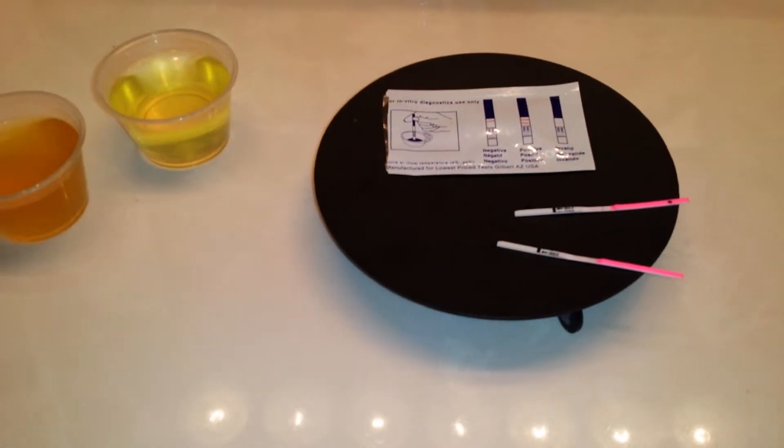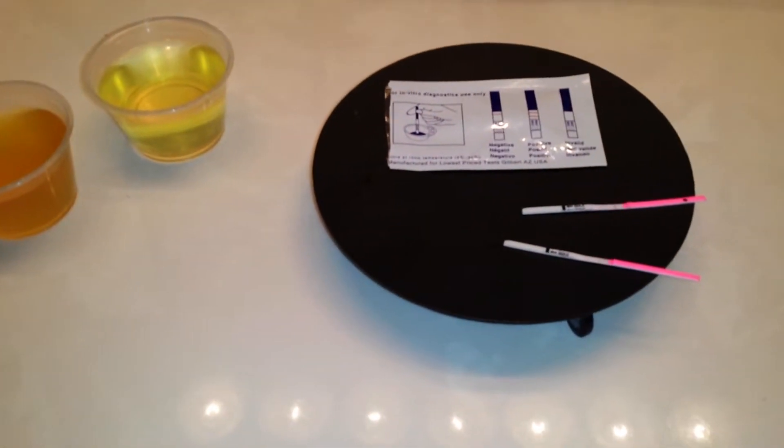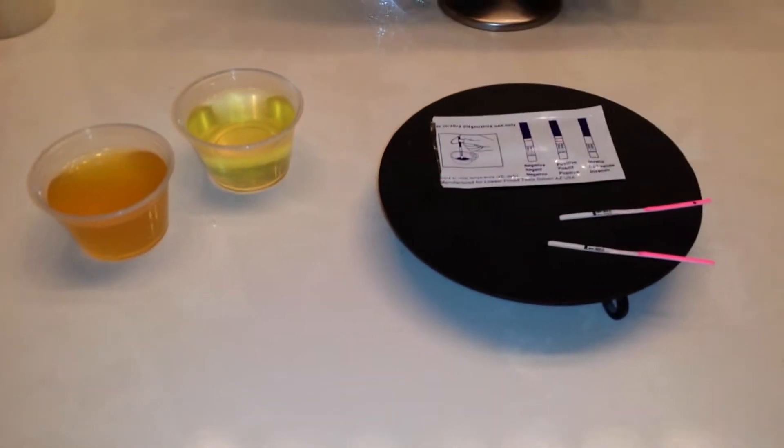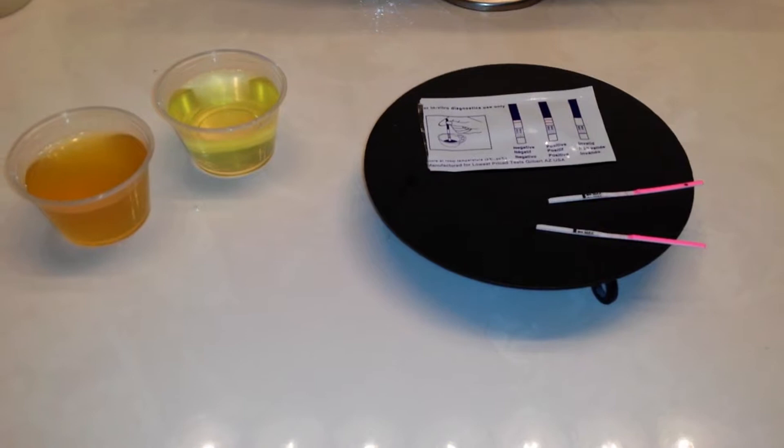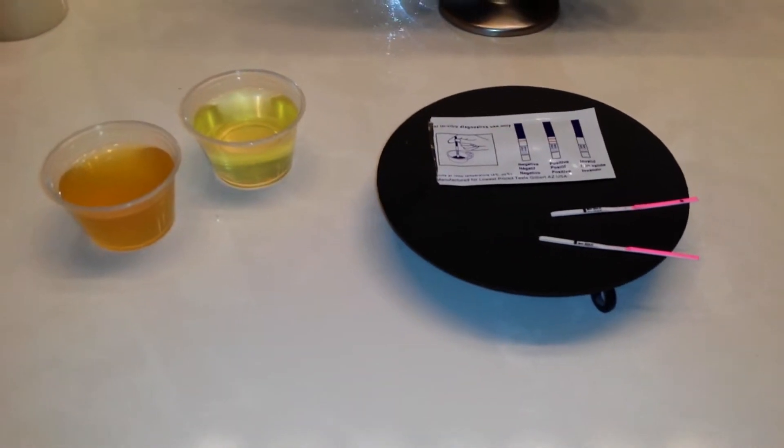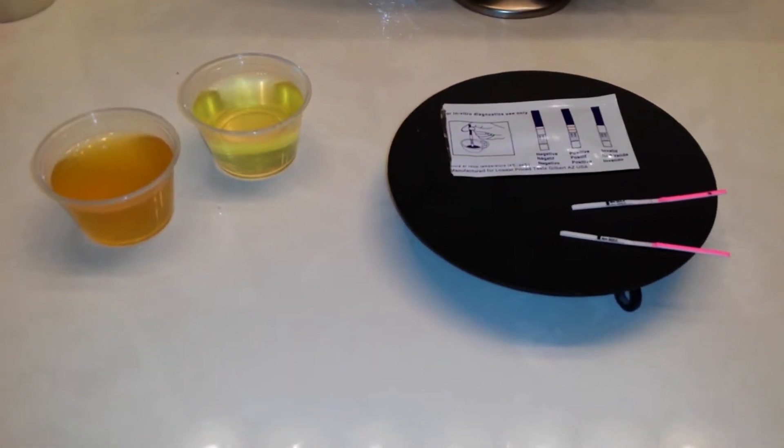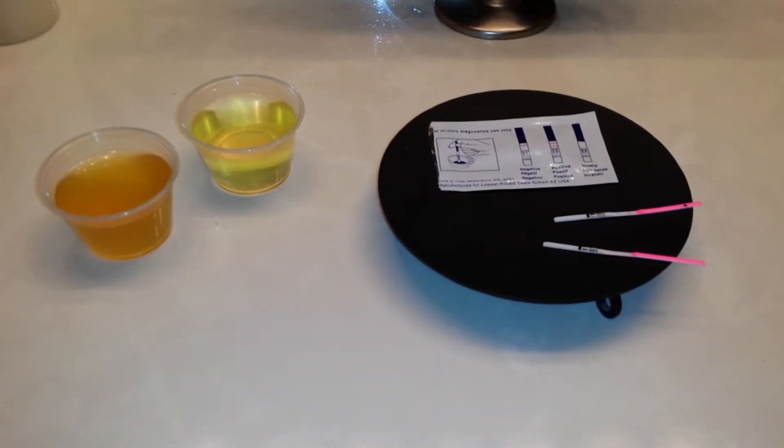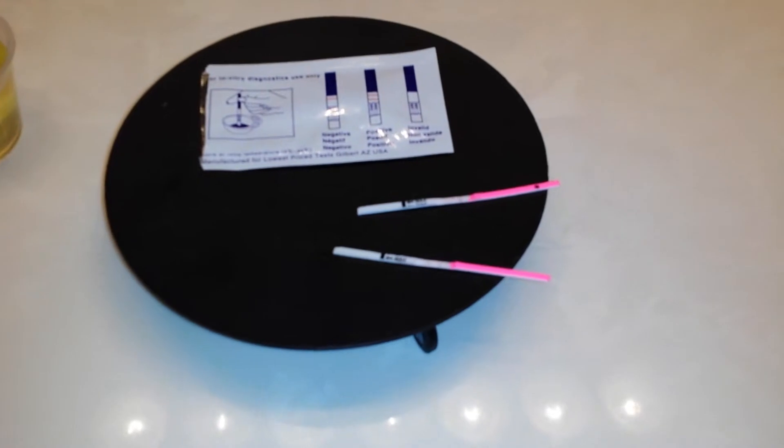Now essentially the way this works, we have this luteinizing hormone that's constantly running through our system and just a day or two prior to ovulation, we get a surge. And the way that the sticks work is they detect an increase in this luteinizing hormone, which we call an LH surge. Now these are 40 MIU.